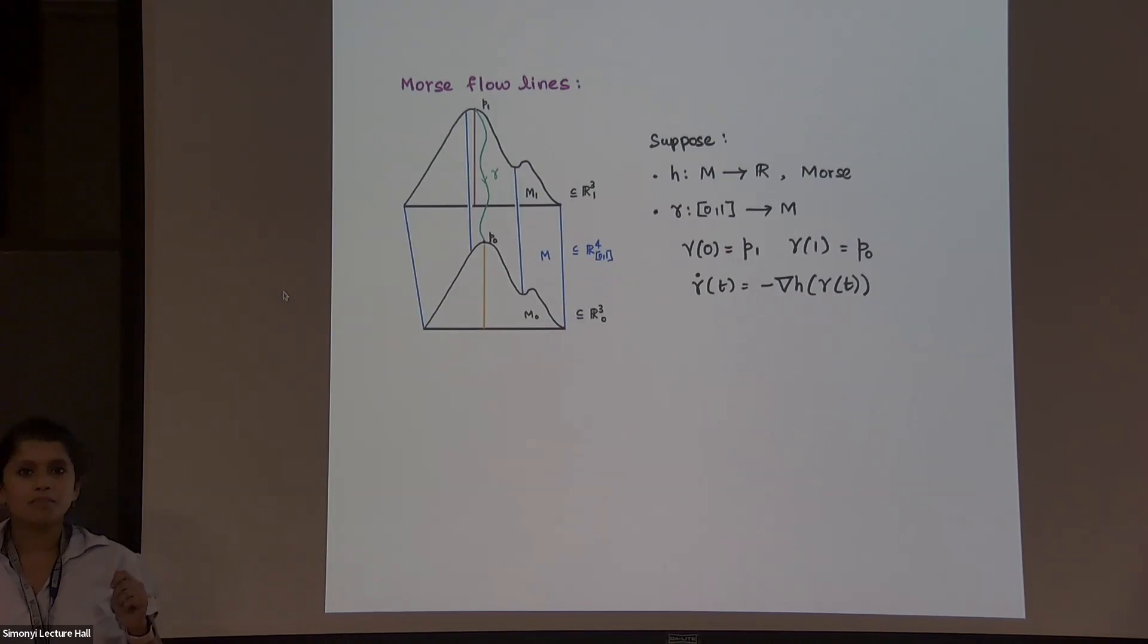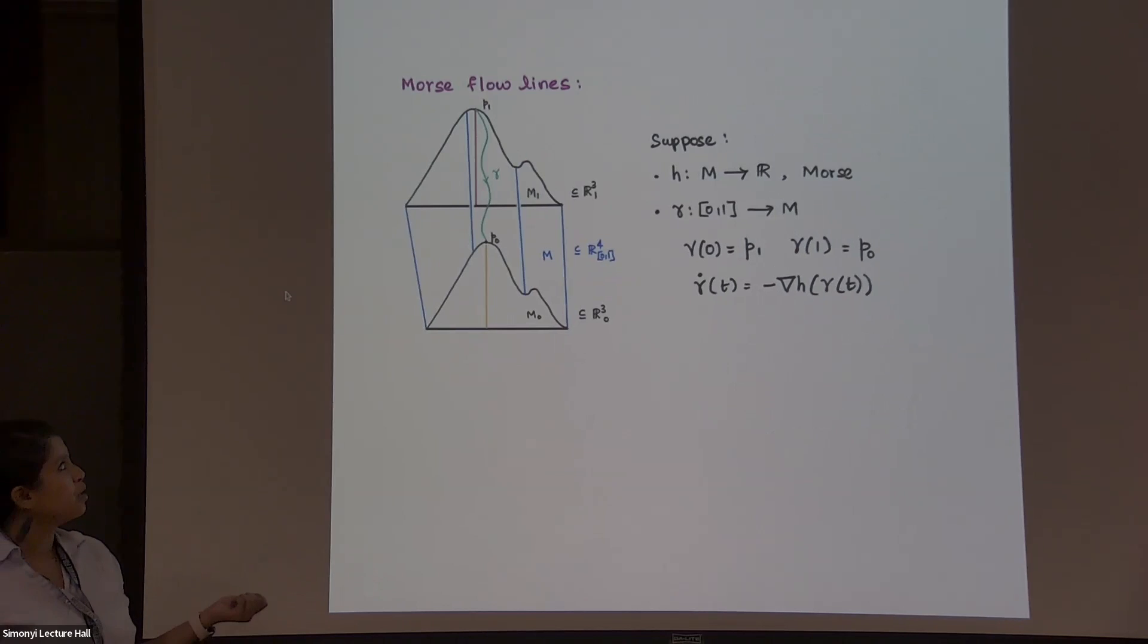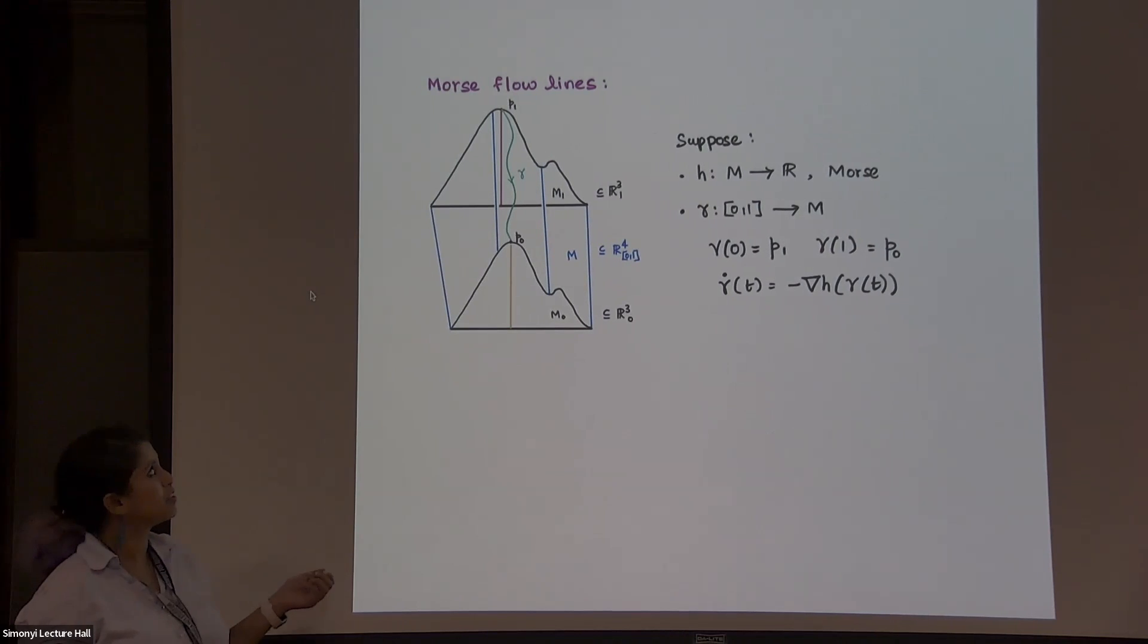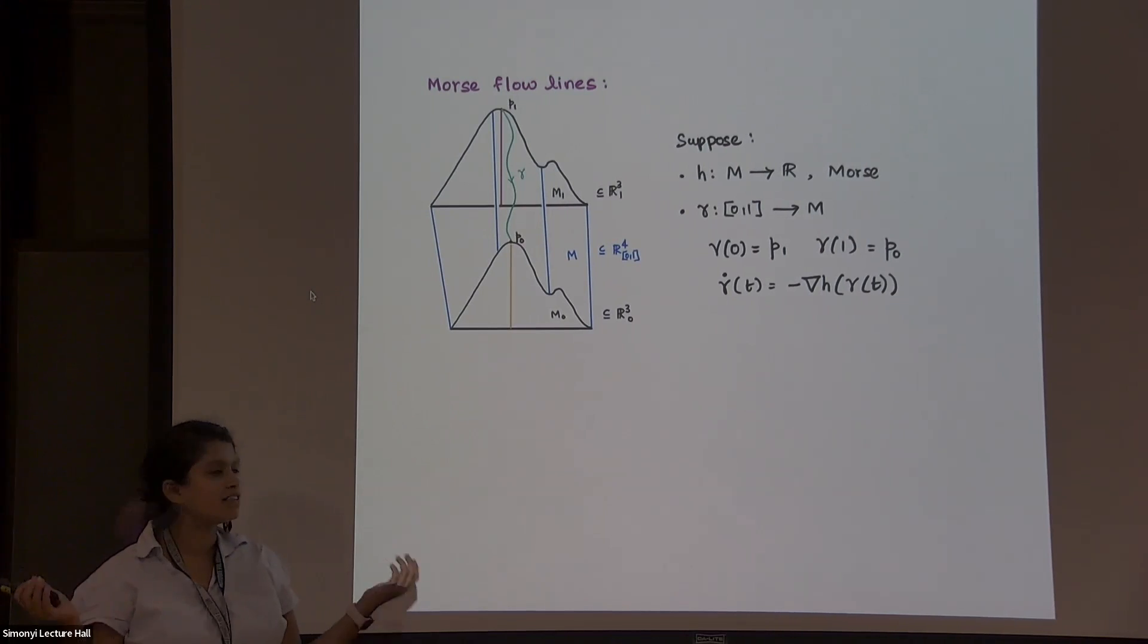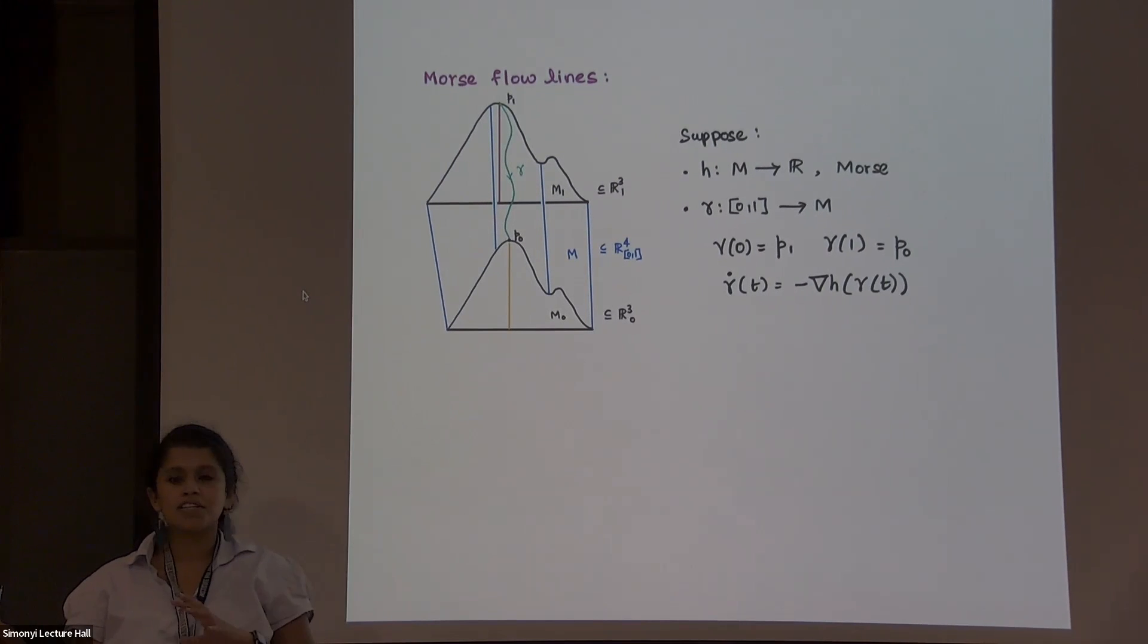And I'm going to tell you how you could think about such things. So we're going to talk about Morse flowlines. What is a Morse flowline? So suppose this cobordism is there, and we have the height function, and it's nice enough that it's Morse. So Morse means that whenever the gradient vanishes, the Hessian is invertible. So it gives you these things called flowlines.